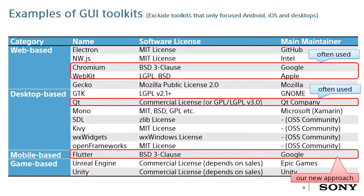These are examples of GUI toolkits, but it doesn't include those that are limited to a specific platform such as Android and iOS. Qt and WebView such as WebKit and Chromium are often used in embedded systems.